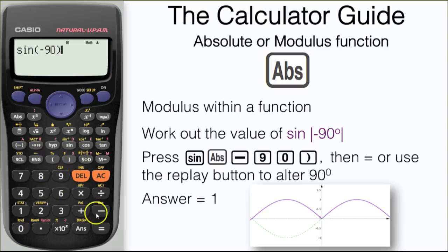Let's just check that now by finding out the sine value for minus 90 without the modulus function. And here we have our answer, minus 1. And we can see that on the dotted green curve.